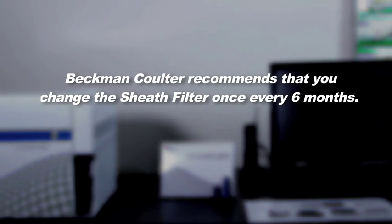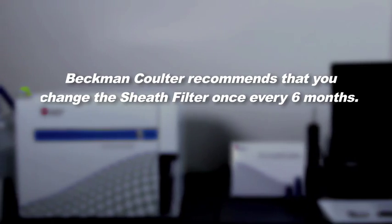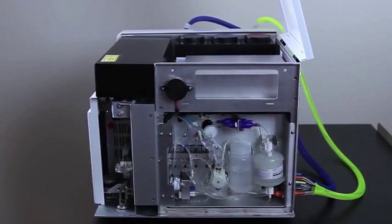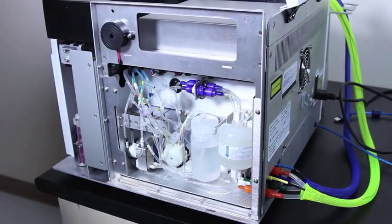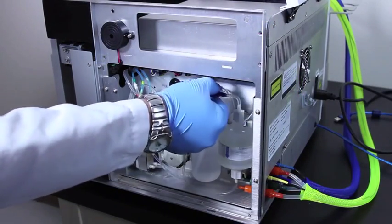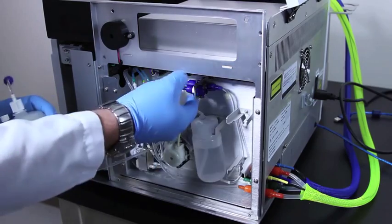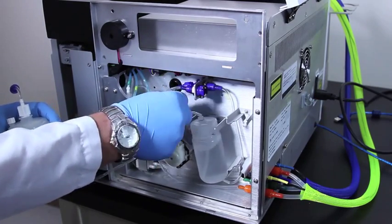Beckman-Coulter recommends that you change the sheath filter once every six months. In order to remove the sheath filter, simply disconnect the quick connector located at the top of the filter area. Gently pull out the filter and disconnect the other end of the quick connector.